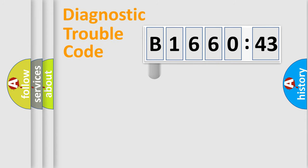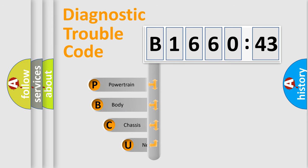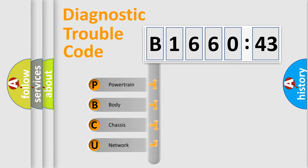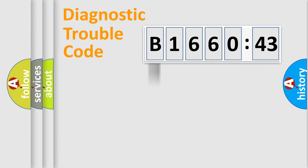First, let's look at the history of diagnostic fault code composition according to the OBD2 protocol, which is unified for all automakers since 2000. We divide the electric system of an automobile into four basic units: Powertrain, Body, Chassis, and Network.